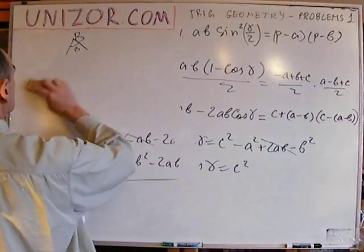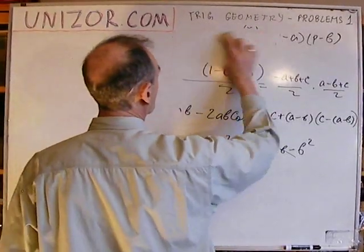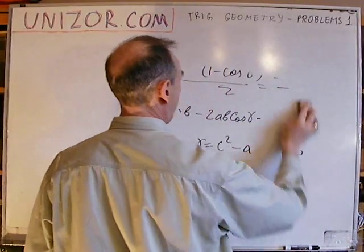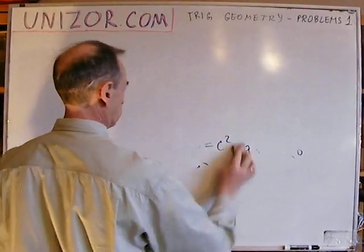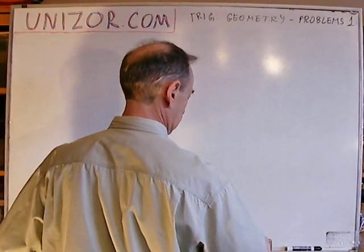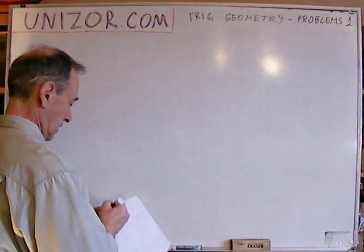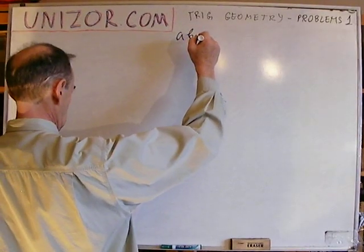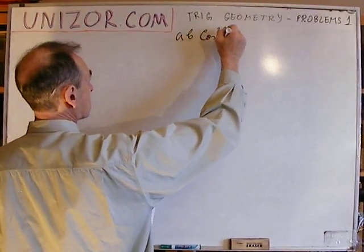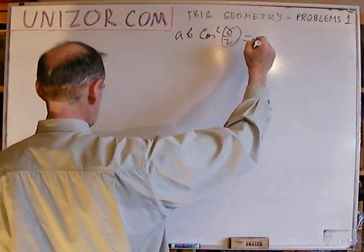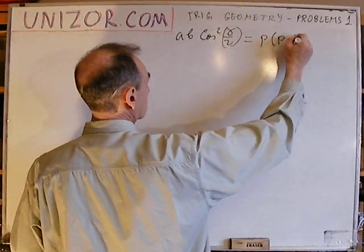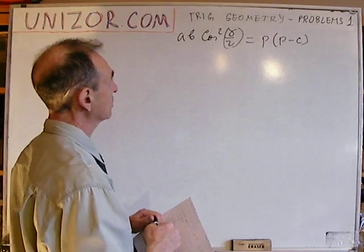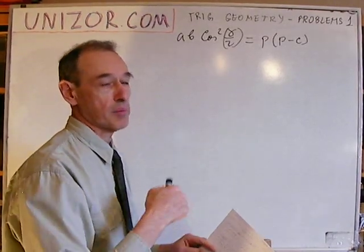Next problem, which is very similar. Now AB times cosine squared of gamma over two equals P(P minus C), where again A, B, and C are sides, P is half the perimeter, and gamma is an angle opposite to side C.